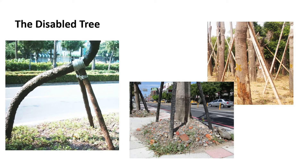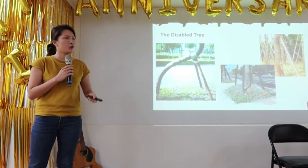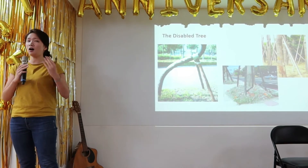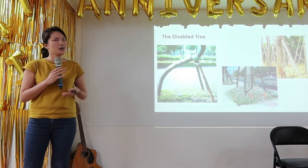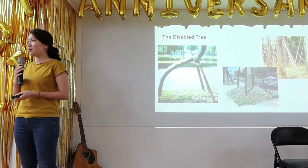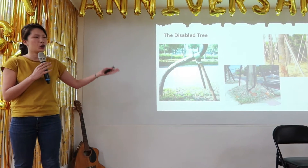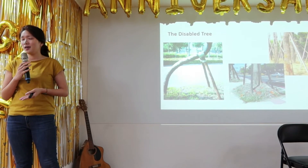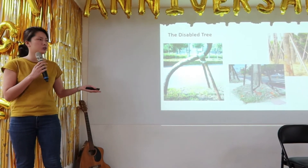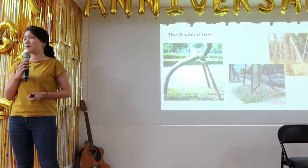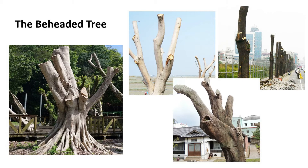Let me show you some of the common mistakes we make when we grow trees. First: the disabled trees. We see this a lot on the streets every day. When trees are still small and unable to stand on their own, we use sticks to support them. But as they grow bigger and taller, we're supposed to remove those sticks so they can stand on their own. A lot of us forget or don't know to remove the sticks, so the trees still rely on them, become disabled, and may fall easily in a typhoon or strong wind.